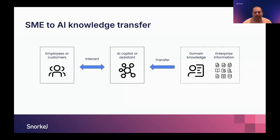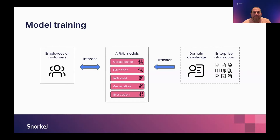That's where AI data development comes in. We know our AI co-pilot will be more effective — answers more accurate, more complete, higher quality — the more we can transfer that knowledge into it. Behind those AI assistants and co-pilots are one or more AI or ML models: classification and information extraction for predictive models, and retrieval, generation, and evaluation for generative models. These are the backbone of your AI assistant or co-pilot. The question is: how can we transfer domain knowledge into these models?